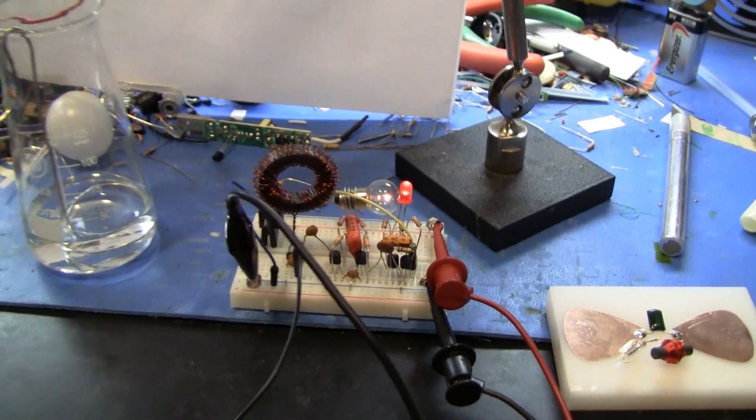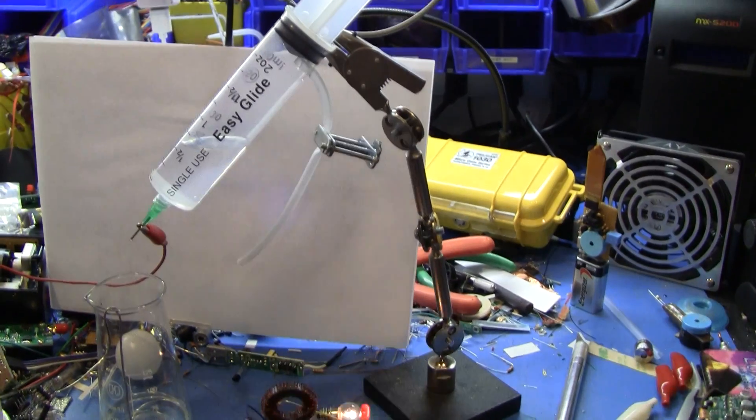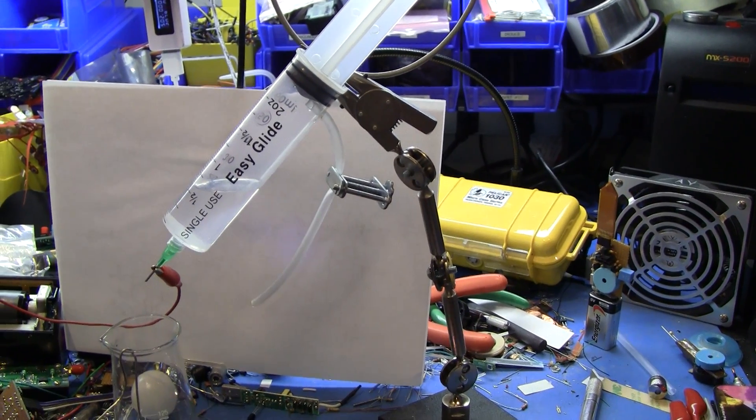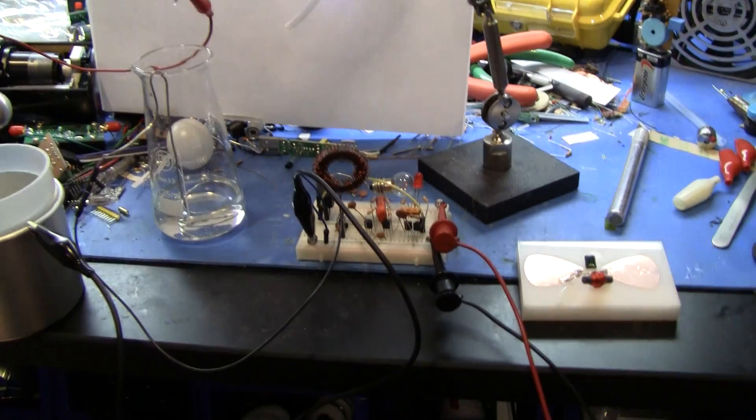So I built this out of bench sweepings that were just sitting on my desk. Yes, everything except the syringe was indeed sitting on my desk. There's a Hoffman clamp there that lets me regulate the drip rate. But otherwise pretty much all of this was just sitting here and it was just junk.